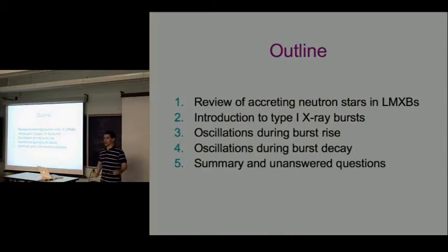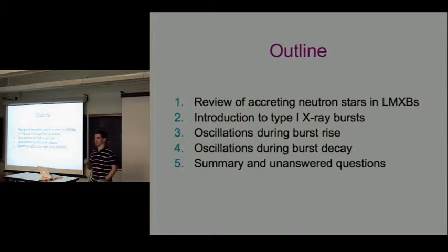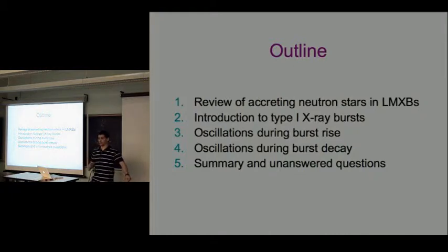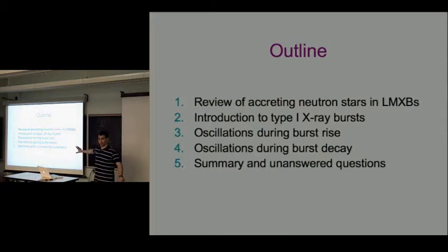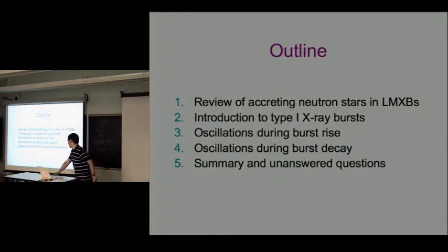These questions motivate the outline of this talk. I'll start with a quick review of neutron stars in general, and in particular neutron stars accreting in a low-mass X-ray binary. Then I'll go into an introduction of Type I X-ray bursts and the basic physics. The nuclear physics of Type I X-ray bursts turns out to be crucial to understanding the oscillations themselves. There are really two types of oscillations - some that occur during the rise and some during the decay. I'll end with a brief summary and a list of open questions.